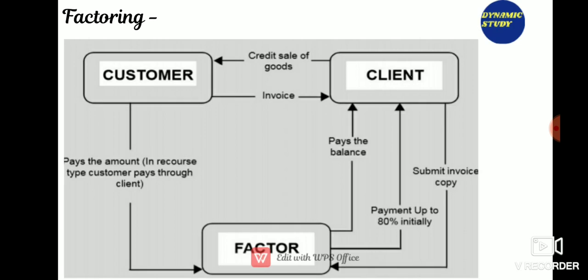Factoring is a financial transaction where an entity sells its receivables to a third party called a factor at a discounted price. It is a financial option for the management of receivables — in simple terms, it is the conversion of credit sales into cash. In factoring, a financial institution buys the accounts receivable of a company and pays up 80% to 90% of the amount immediately on formation of the agreement.